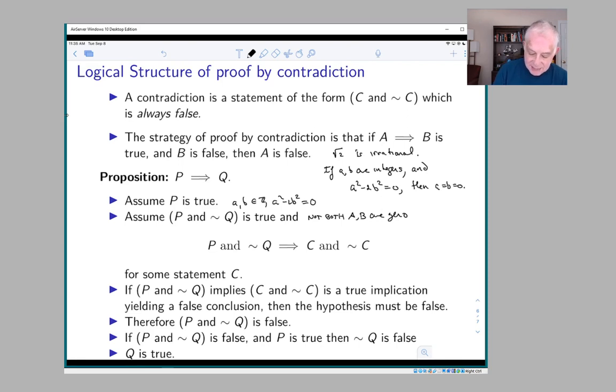And now you try to find a statement C which is implied by this hypothesis, and also its negation is implied by that hypothesis. So what did we do?